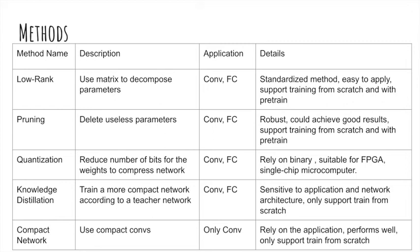Knowledge distillation is like a teacher teaching a student. Usually a deeper and bigger model has higher accuracy and we consider it as a teacher model. But when deploying, we prefer a lightweight model, which is the student model. If we train a lightweight model from scratch, it won't perform very well. So instead, we train a teacher model first and then train a student model, where the teacher model guides the student model to learn, so the teacher's knowledge is transferred to the student. This method could be applied to both conv and fully connected layers. It's sensitive to the application and network architecture. The teacher model needs to be big and deep. Classification problems are easier, but detection, recognition, and segmentation are harder problems for knowledge distillation.